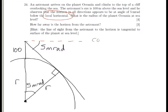So, the cosine of 5, and remember it's milliradians, so 5 times 10 to the minus 3, is equal to the adjacent, which is r, divided by the hypotenuse, which is 100 plus r.